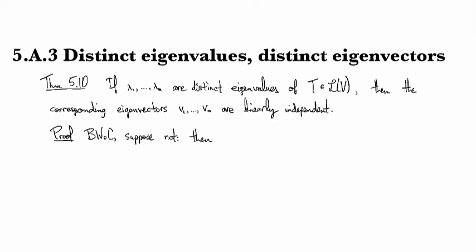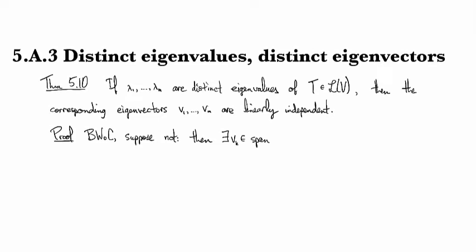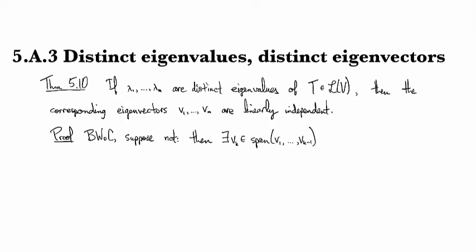Then we have a dependence relation, so there exists a v_k which is in the span of v_1 through v_{k-1}. And that was by 2.21 I believe.